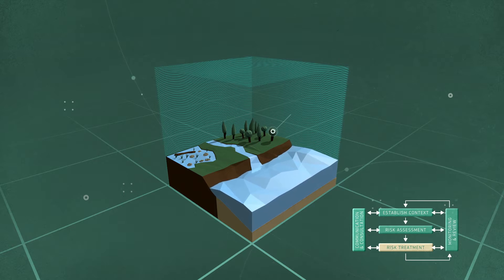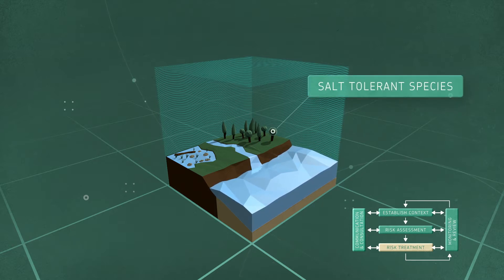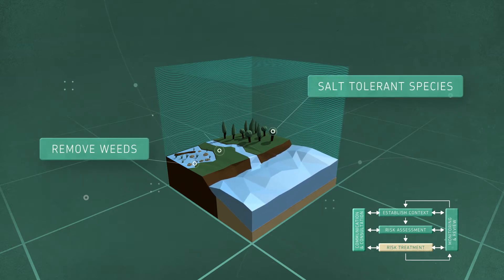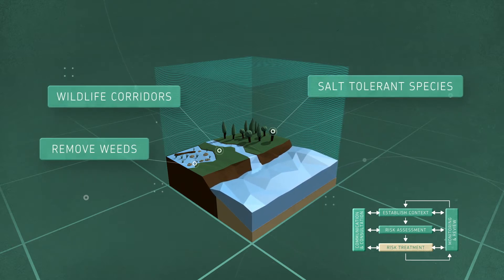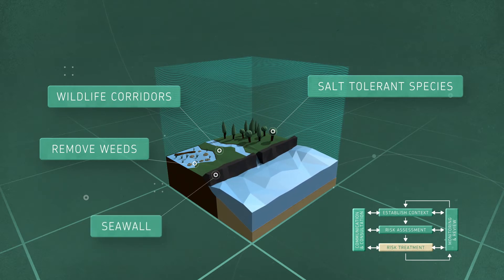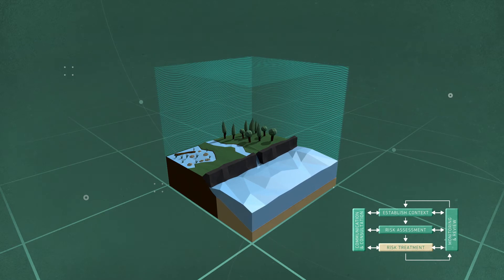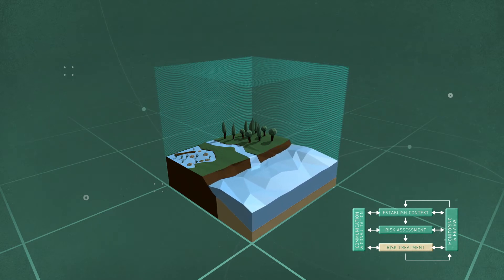For example: plant salt tolerant species, remove weeds, establish wildlife corridors, or build a seawall. Decisions should incorporate different perspectives such as costs and benefits, institutional arrangements and legislation, and societal values and preferences.